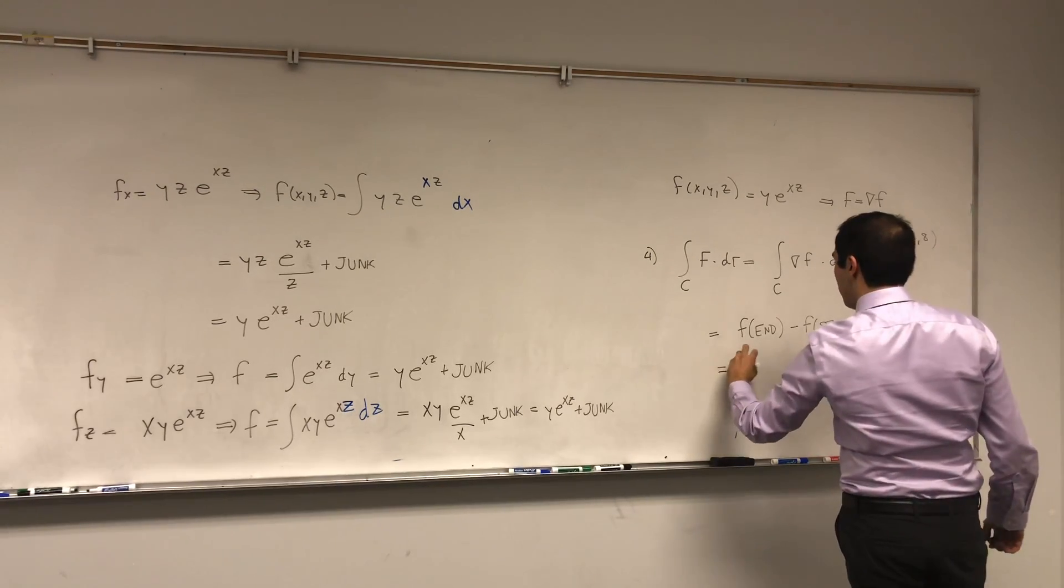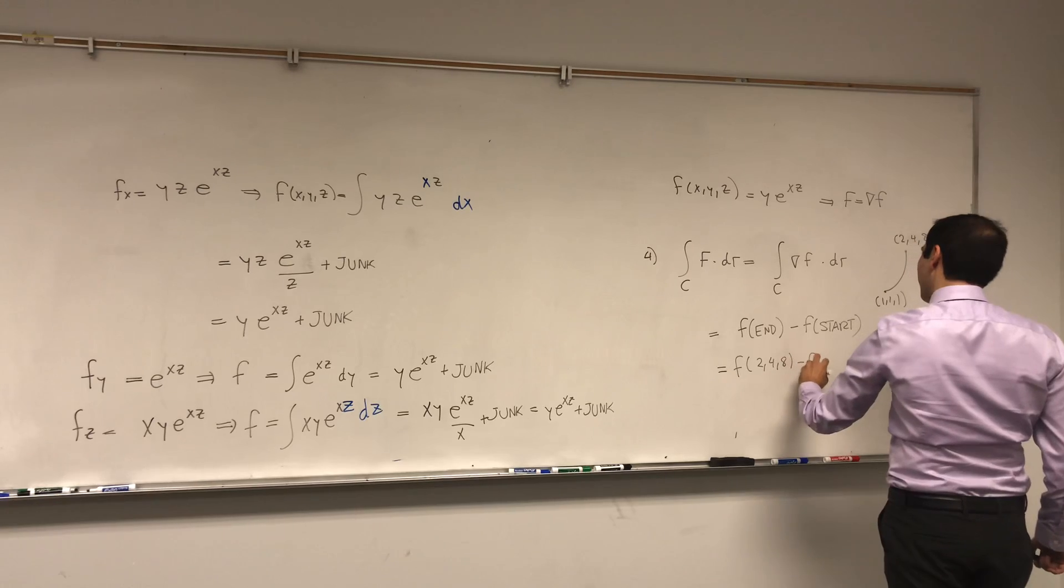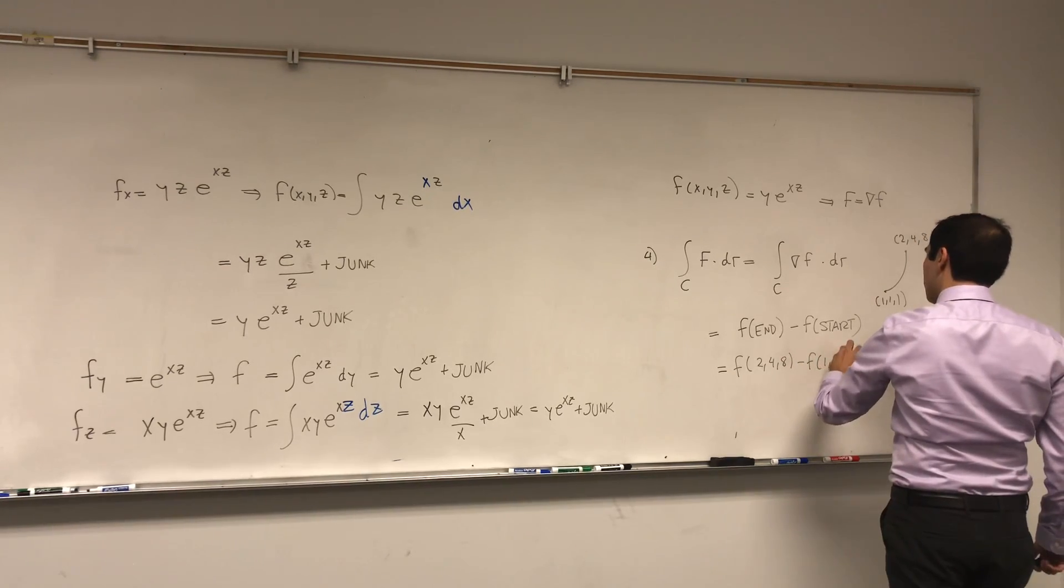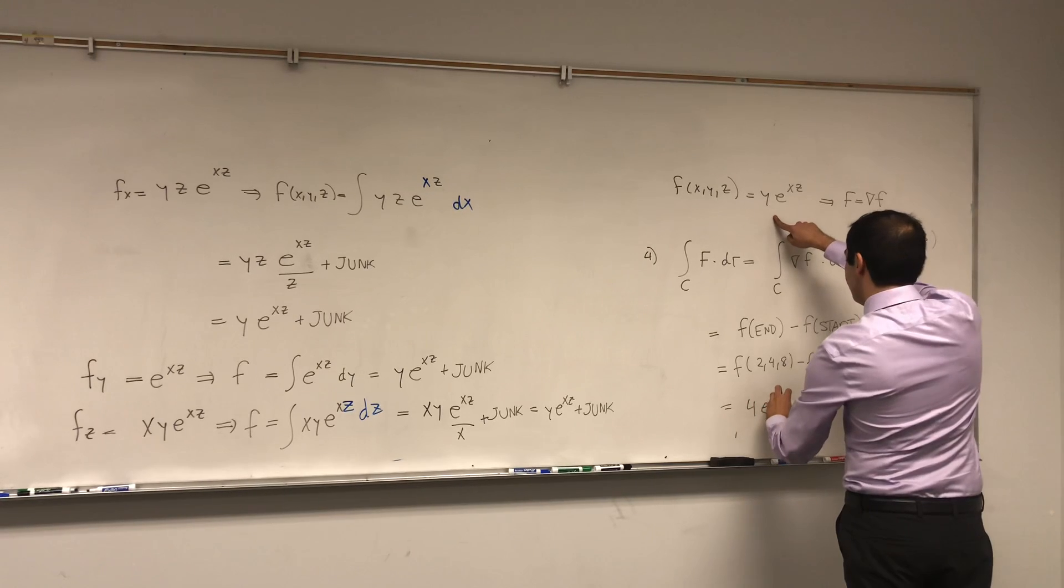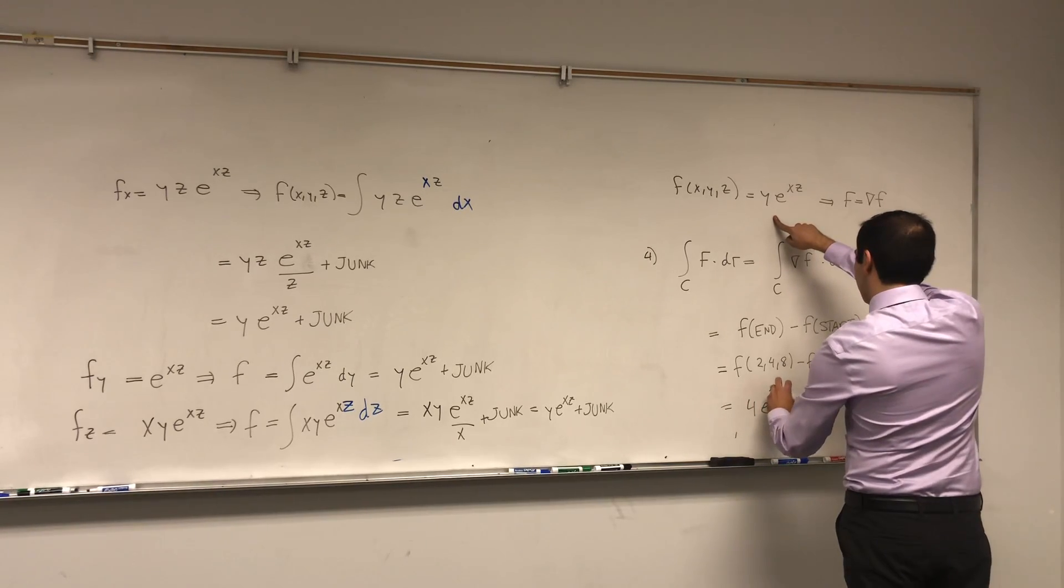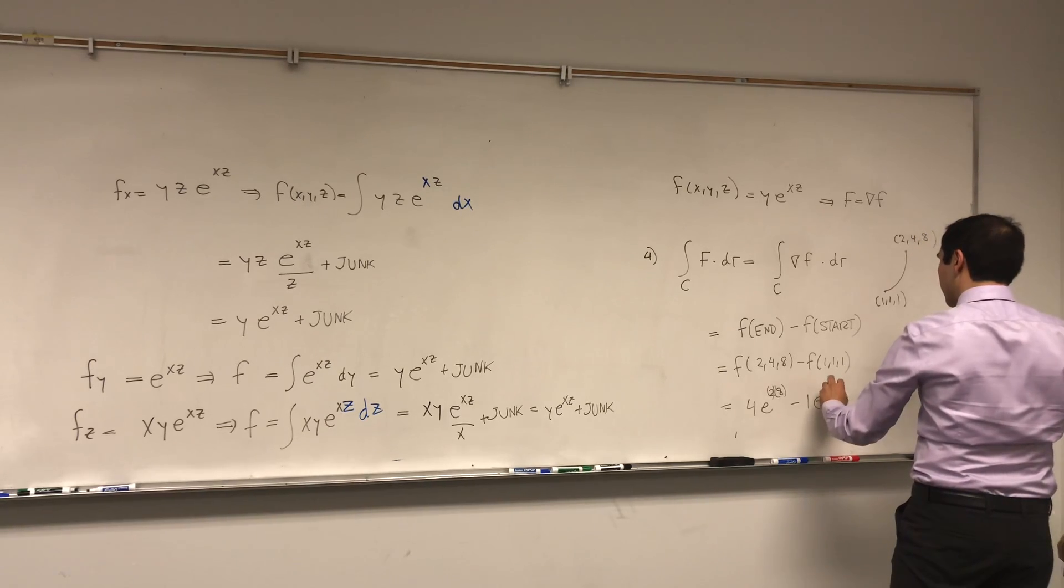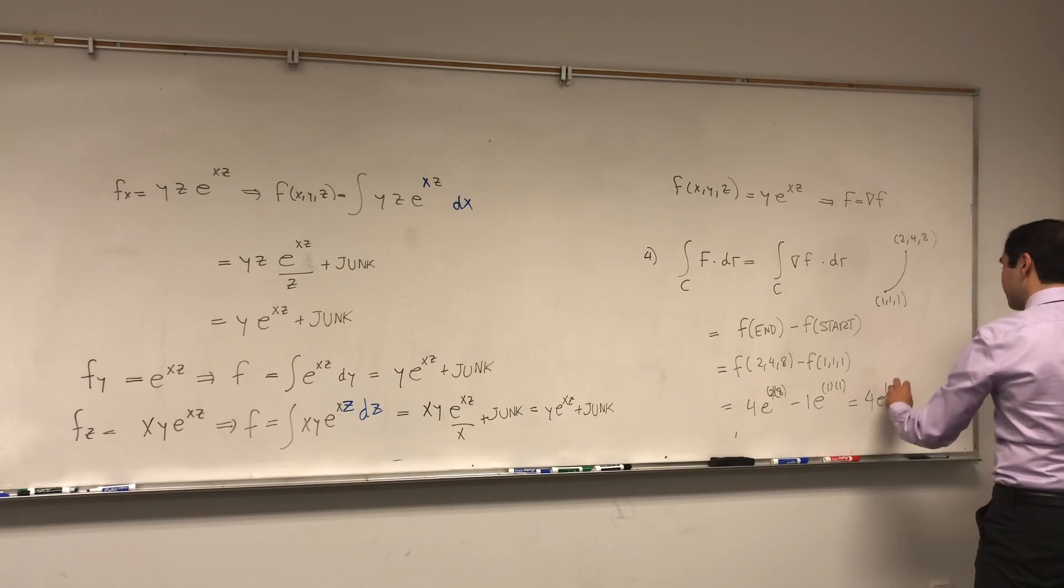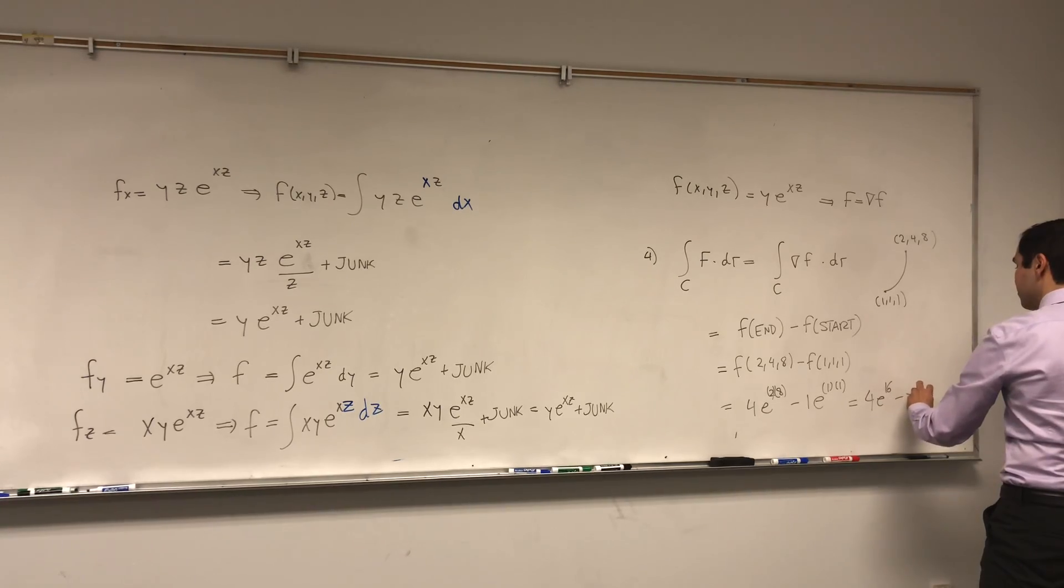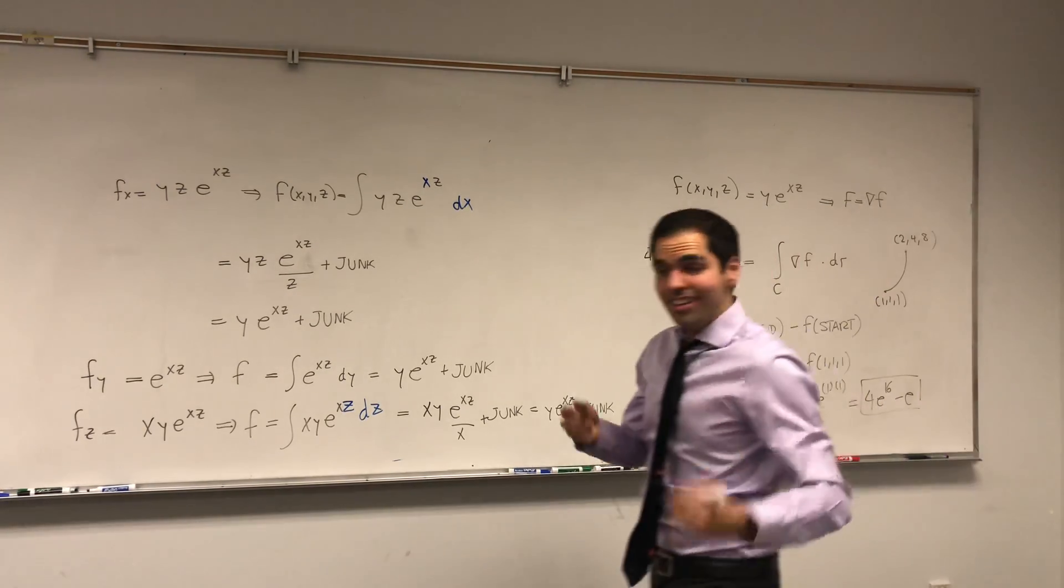So what it becomes? It's f of 2, 4, 8 minus f of 1, 1, 1. And that now becomes 4 e to the 2 times 8, minus 1 e to the 1 times 1, which becomes 4 e to the 16 minus e. And that's the line integral.